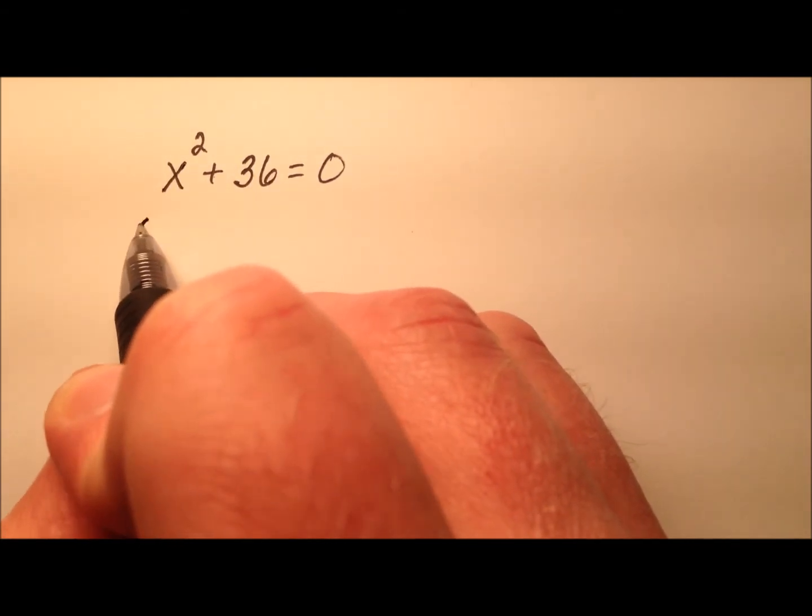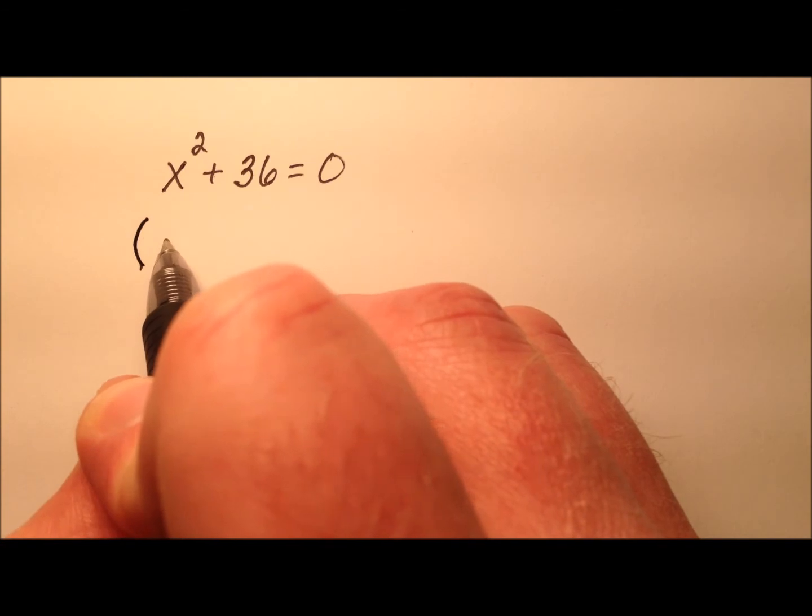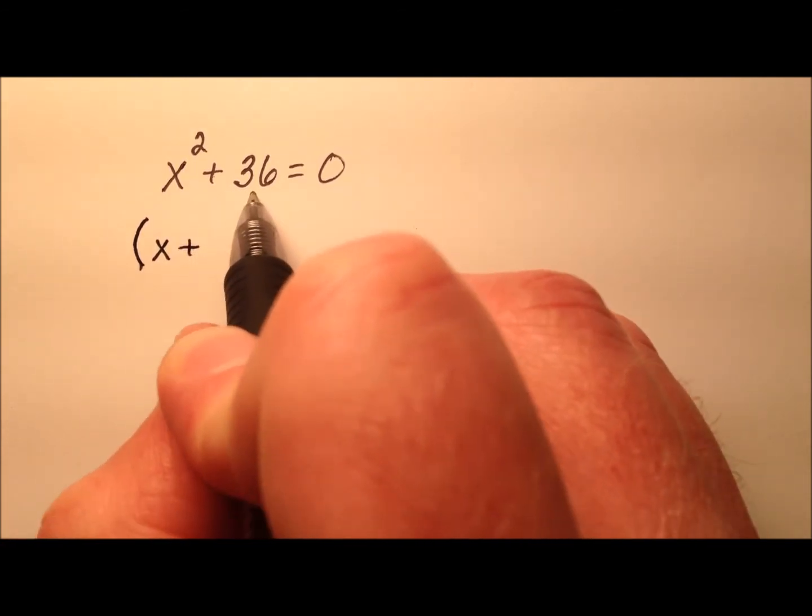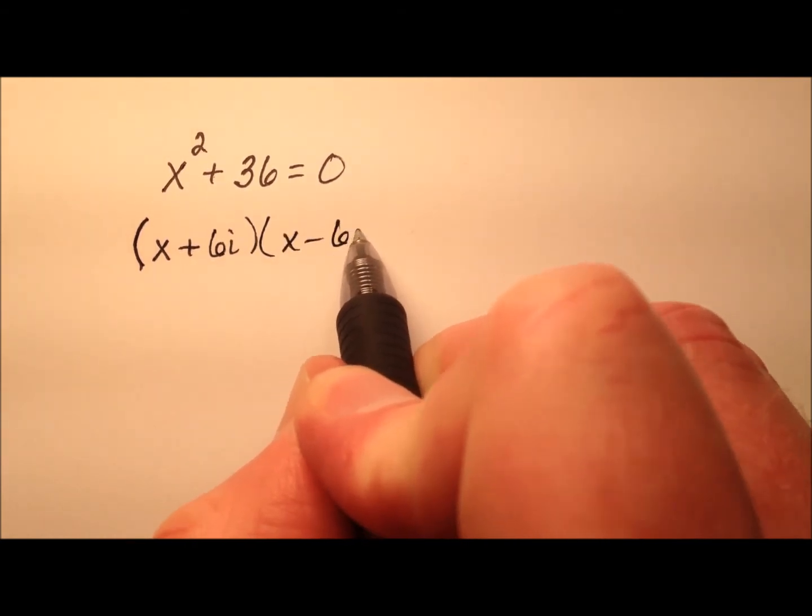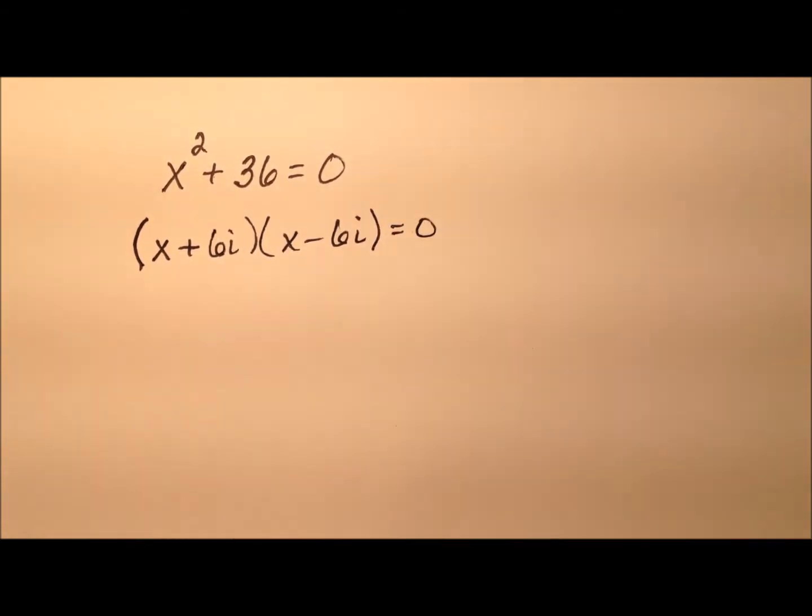So x plus, and the square root here will be 6i, and then x minus 6i equals 0.